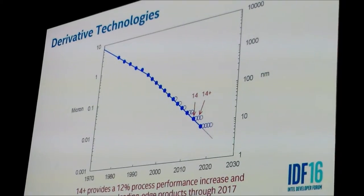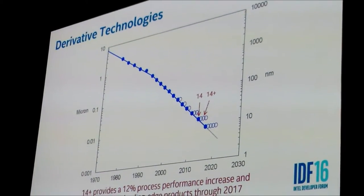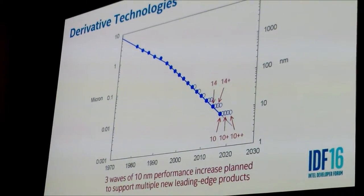One example of derivative technologies is on the 14 nanometer node. We first came out with the 14 nanometer process used for Broadwell, and then about a year and a half later came out with what we call 14+, which provides about a 12% process performance increase. Likewise, on our coming 10 nanometer technology, first will come out as 10 nanometers, then 10+ with enhanced performance, and then 10++. All three versions are already in development.